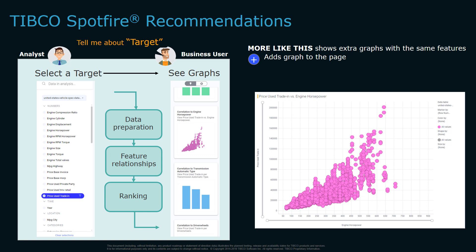The Spotfire AI recommendation engine is an intelligent way to build visual analysis based on relationships in your data. By looking for predictive variables given a target variable in a dataset, the recommendation engine will rank charts for the user, preventing the user from having to manually compare different variables for insight. This greatly accelerates analysis creation. The engine works by first removing any noisy or uninformative data from the dataset, then uses statistical inference to find the strongest relationships, and finally ranks the recommended charts by strength of those relationships.